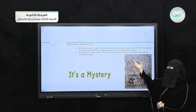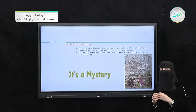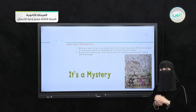We have a pre-reading question. Number one: what are some things in the natural world that might have been difficult for people to understand before the development of science and technology? Think critically — ask yourself what things might have been difficult to understand with science. From my opinion, a natural phenomenon is one example for these things.